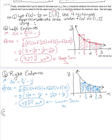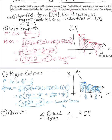An observation for part C: the actual area under this curve is bound by our lower and upper sums. In this case, all we really know for sure is that the actual area falls somewhere between 0.48 and 0.927.